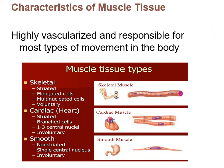Now we move to muscle tissue. Muscle tissue is highly vascularized with a great blood supply and is responsible for most types of movement in the body. There are three different types: skeletal muscle, cardiac muscle, and smooth muscle.